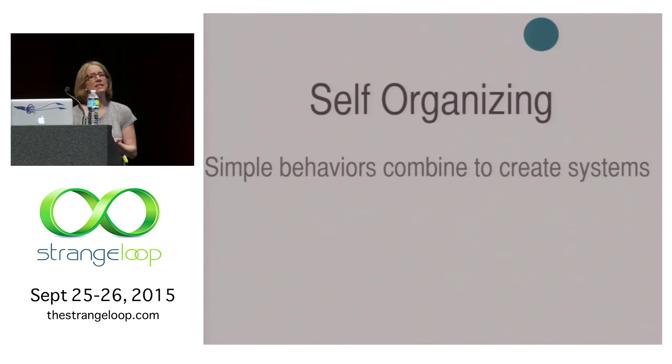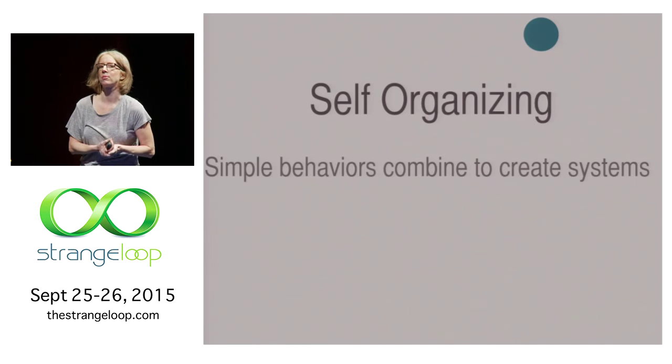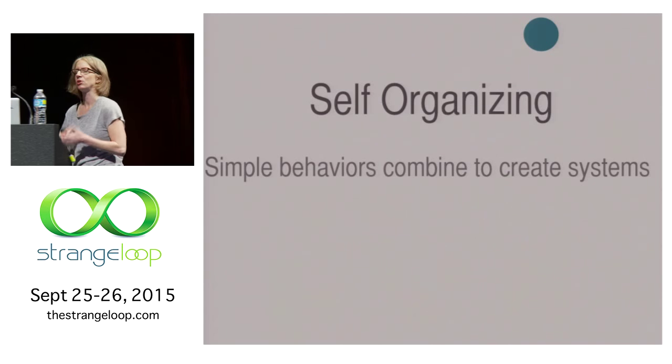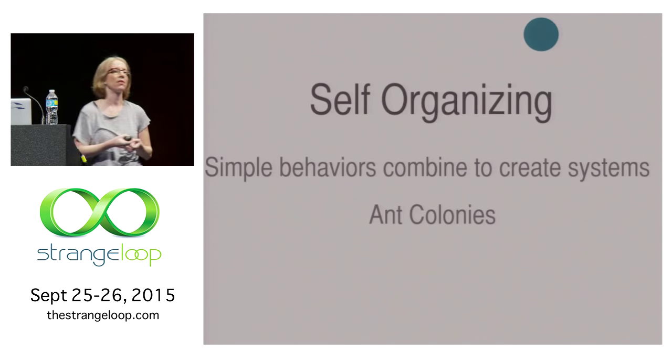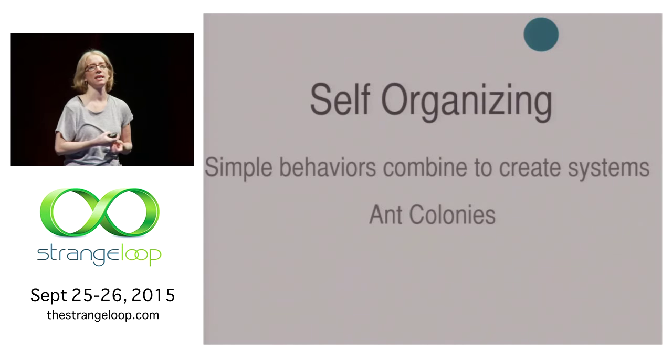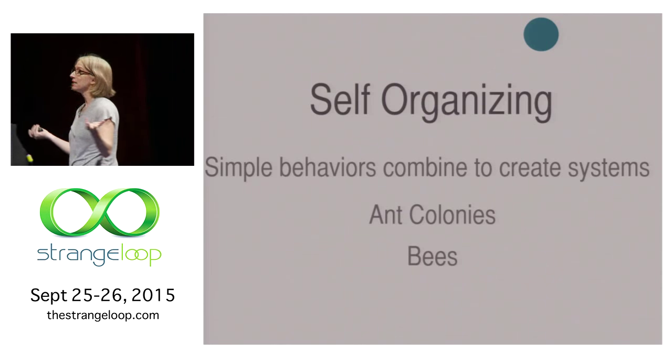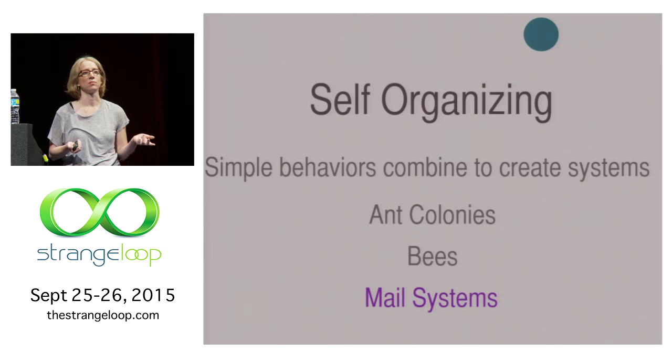With these simple behaviors, we can get some pretty interesting properties. We can combine these simple behaviors into self-organizing systems. We see this all the time in nature as well, right? We see ants doing this with ant colonies. We see bees doing this as well. And we, of course, see this all the time in mail systems.